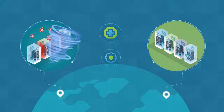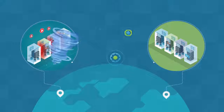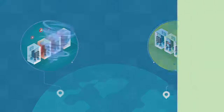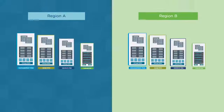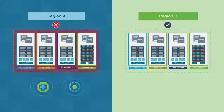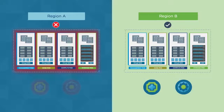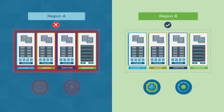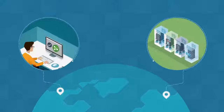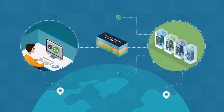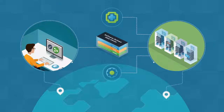In the event of a disaster affecting the primary region, vRealize Operations and vRealize Automation are brought online in the recovery region. Once recovered, these solutions resume normal operations.